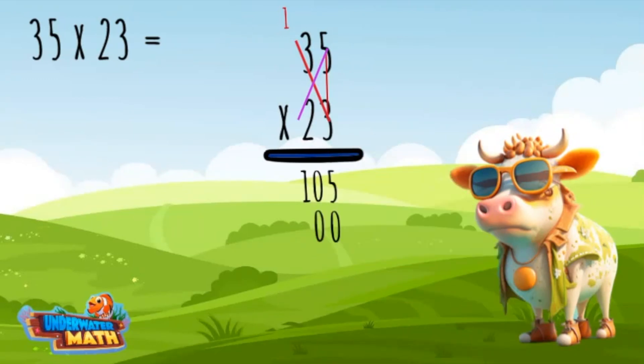The zero goes below the problem and the one is carried over to the tens place. Next, we multiply two times three and add the one carried over for an answer of seven. We go below the problem and add the two lines together to find the product.